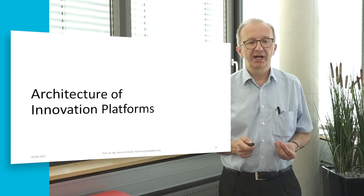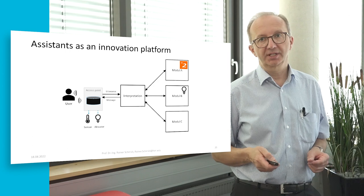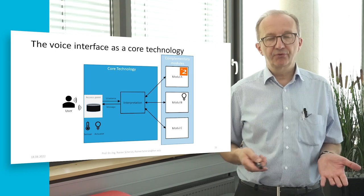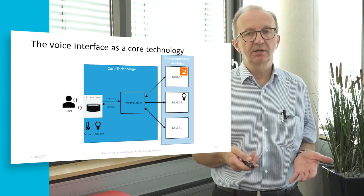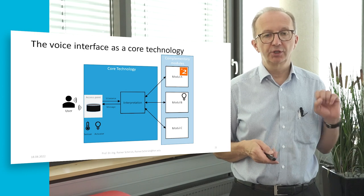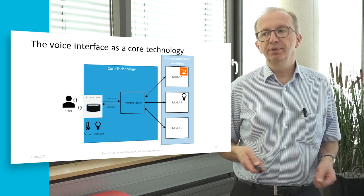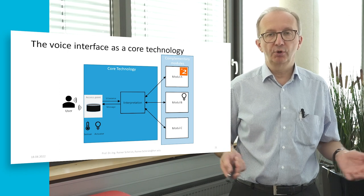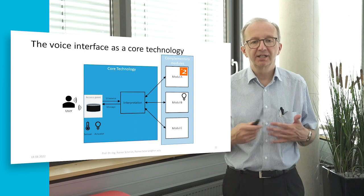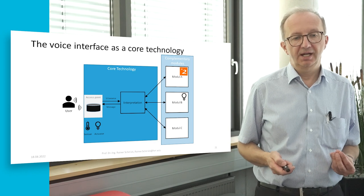Now let's have a closer look at the architecture of innovation platforms. Take for example a voice assistant such as Alexa or Google Assistant. There we have a core technology responsible for interpreting the user's utterances, collected with an access point like the Echo Dot. And there are complements — modules that are the skills on Alexa — for example, asking for a weather report, travel information, and so on. So we have a core technology and modules: this basic architecture appears again and again on these platforms.